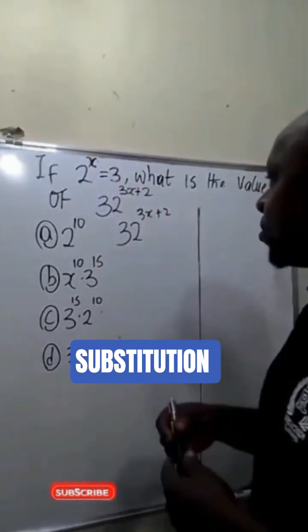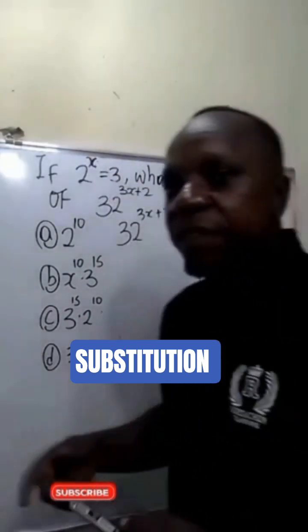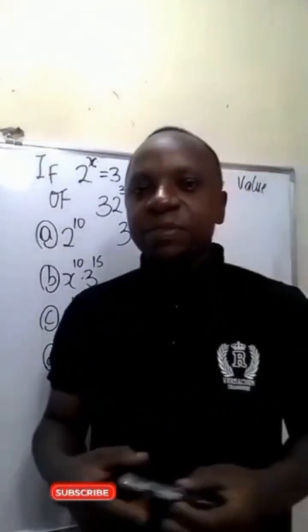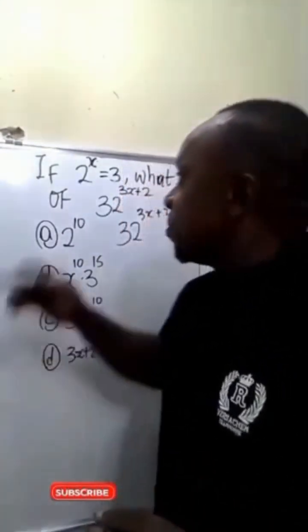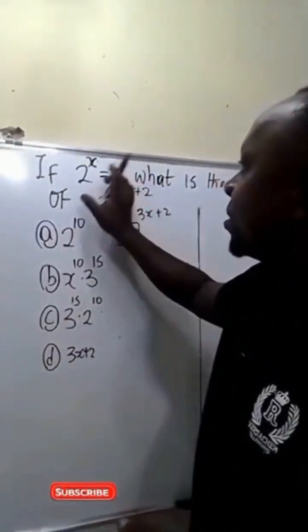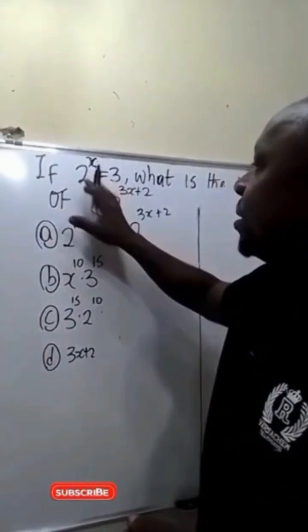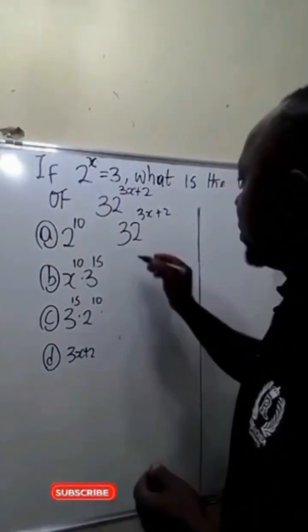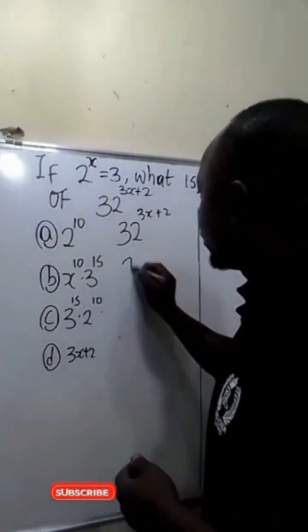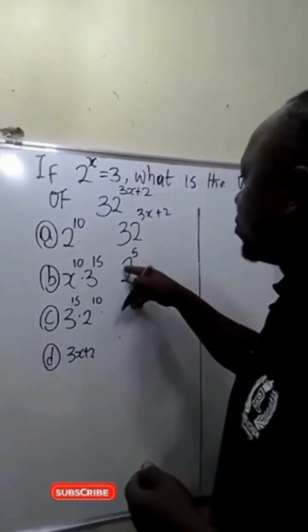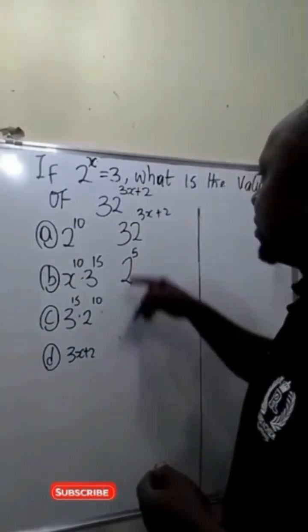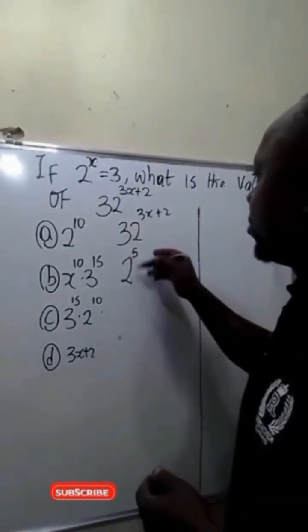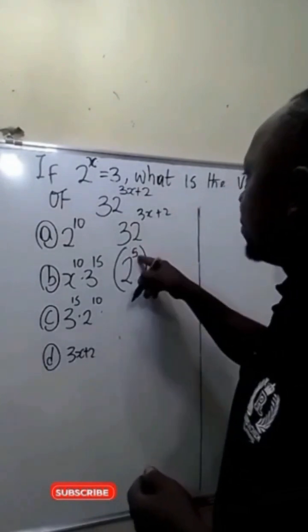The first thing we'll be doing is to express 32 in base 2, since one of our numbers is given in base 2. 32 in base 2 is the same as 2 raised to power 5 — that is, 2 multiplied in 5 places will give us 32.